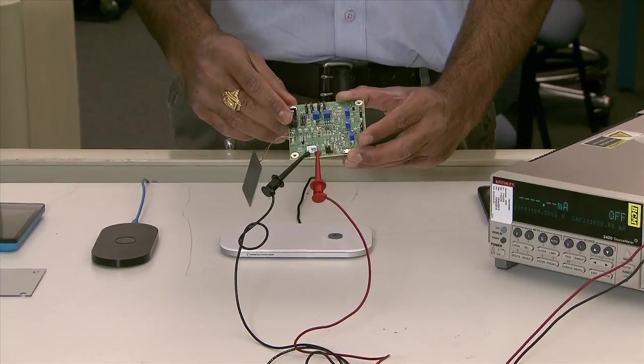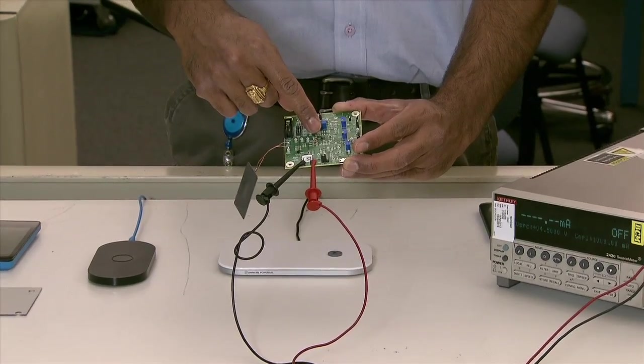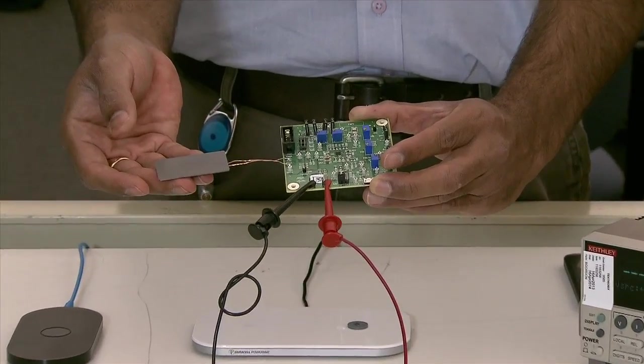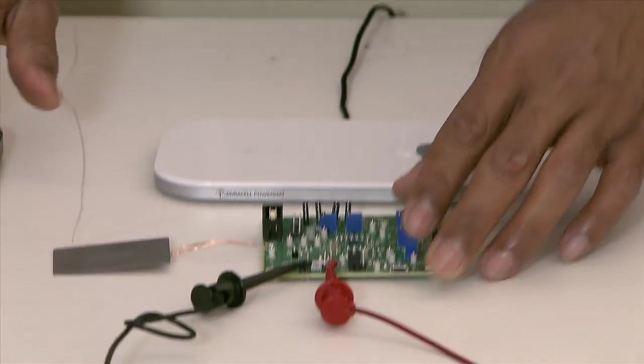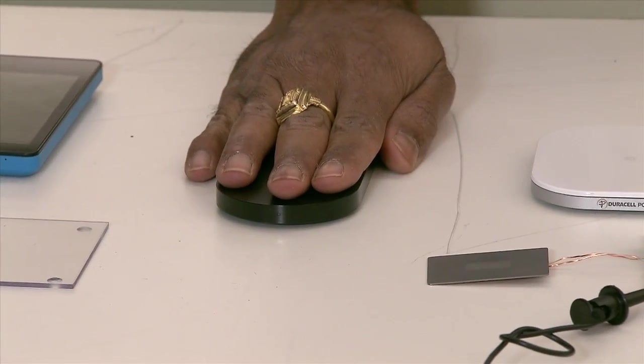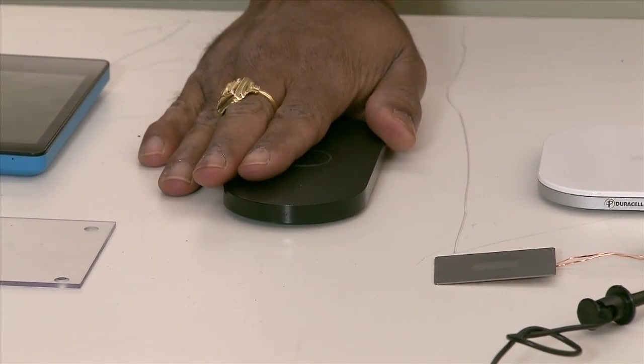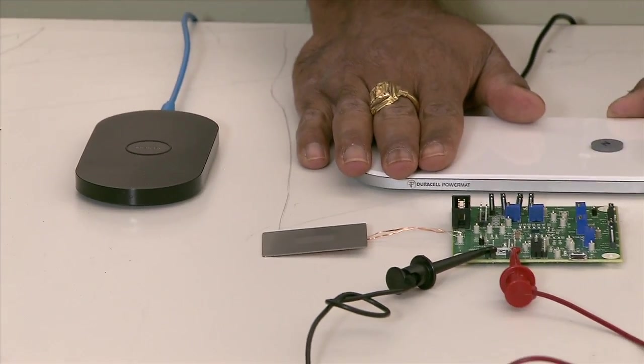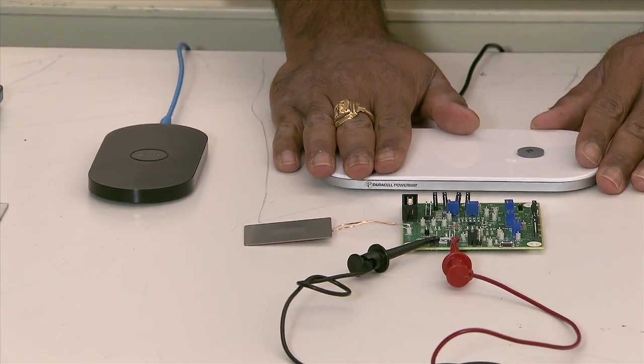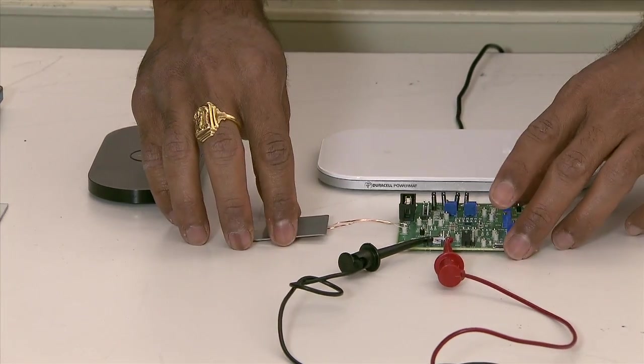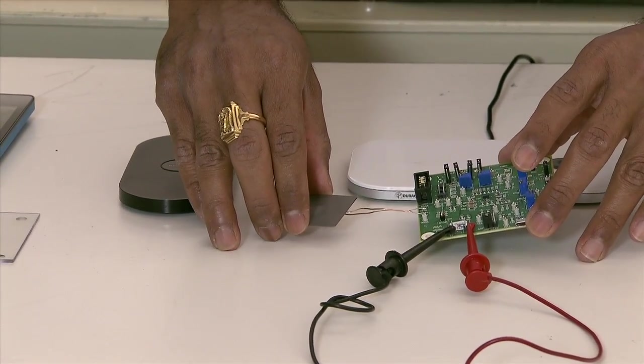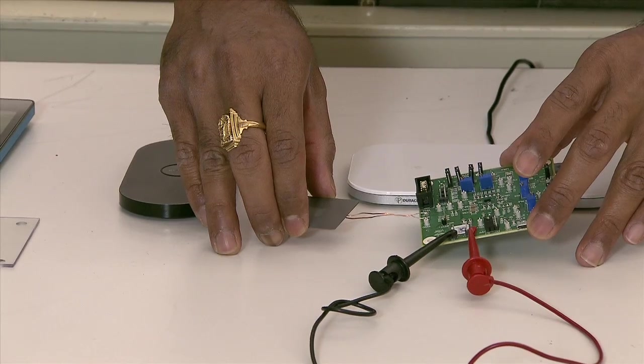What you can see here is an internal board with our receiver IC connected to a wireless receiver coil. Over here I have a WPC compliant transmitter that is available in the market as well as a PMA compliant transmitter that is also available in the market. I will take the same EVM and place it on both the transmitters and show operation at 5 watts.